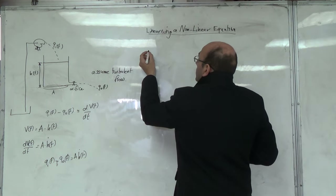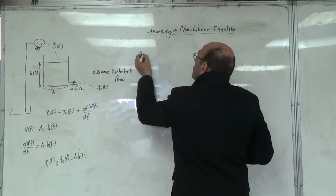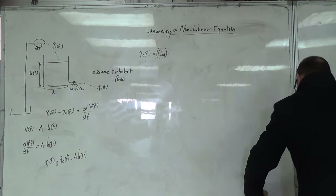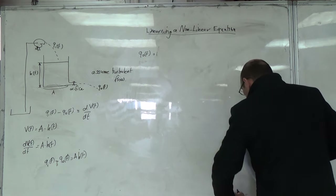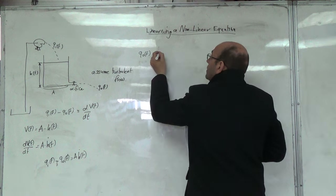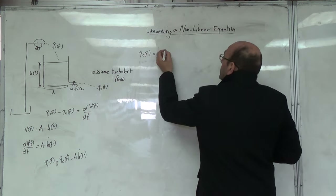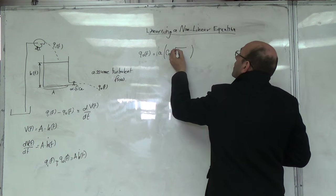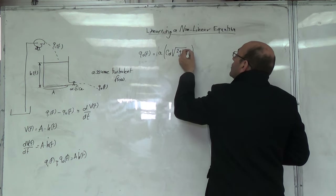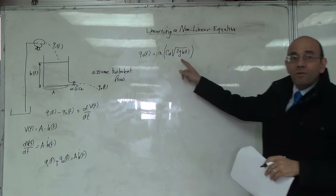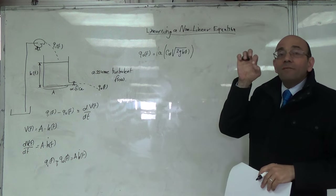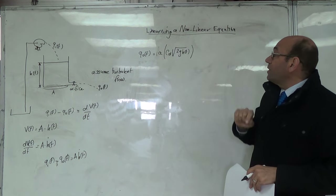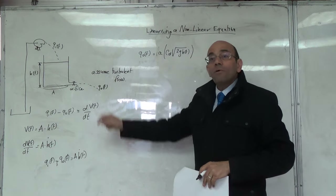So we're going to have the output flow Q_out(t), which equals C_D times small a — where small a is the area of the orifice — times the velocity, which gives us square root of 2g times h(t). This is related to turbulent flow. The coefficient of discharge C_D depends on the shape of the orifice and the Reynolds number. The flow has a square root relationship because it is turbulent.